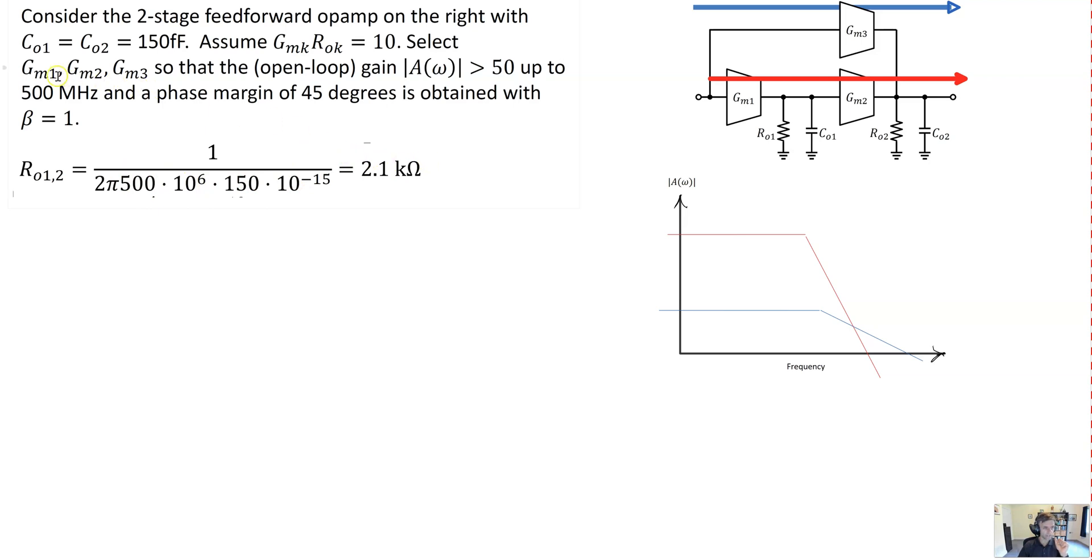The transconductance, GM1 and GM2, is then determined by the fact that the DC gain of each of these transconductance amplifiers is only 10. So we can use this expression now to calculate those transconductances. GM1 and GM2 are the DC gain 10 over the resistances. That gives us 4.7 milliamps per volt.